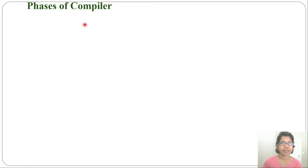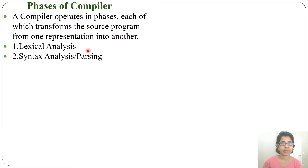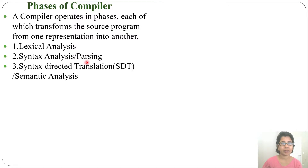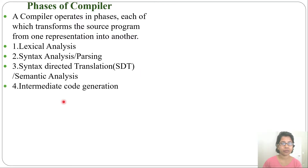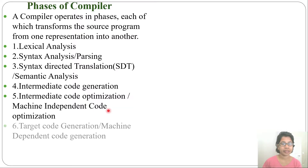A compiler operates in phases, each of which transforms the source program from one representation to another. The first phase is lexical analysis, second is syntax analysis or parsing, third is semantic analysis also called syntax directed translation or SDT, fourth is intermediate code generation, and fifth is intermediate code optimization or machine independent code optimization, sixth is target code generation or machine dependent code generation.